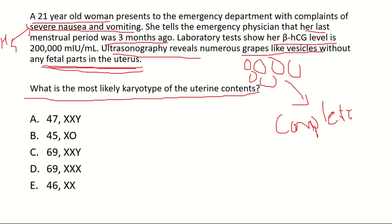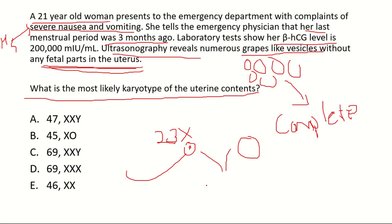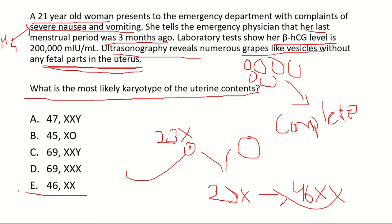The most likely karyotype of the uterine contents: in complete mole, a normal sperm with haploid 23X fertilizes a completely empty egg, and the haploid chromosome duplicates from 23X to 46XX. So the correct answer is 46XX. For reference, 47XX is seen in Klinefelter syndrome, 45XO is the karyotype of Turner syndrome, and 69XXX or 69XXY karyotypes suggest partial mole.